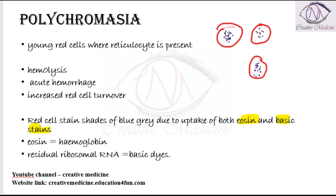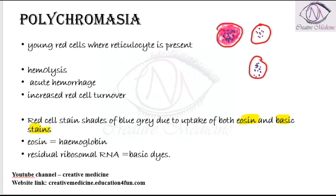That is because the hemoglobin which is present in the cell will stain red — that reddish colour is because of the hemoglobin. Whereas the ribosomal RNA which is present in the reticulocyte is stained bluish colour by basic dyes. So this is polychromasia.